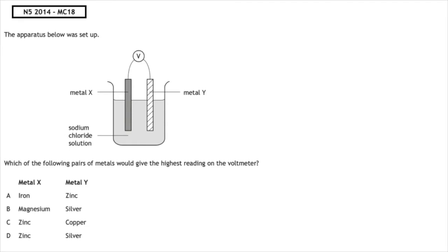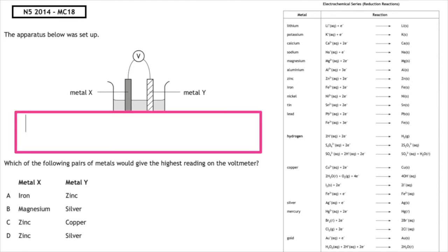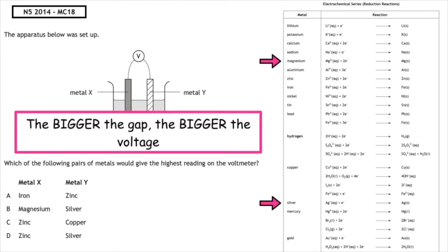This past paper question is from the National 5, 2014, multiple choice 18. The apparatus below was set up. We have metal X and we have metal Y. Which of the following pairs of metals would give the highest reading on the voltmeter? Remember, the bigger the gap, the bigger the voltage. When we look at all the different combinations, we can see that the correct answer to this is multiple choice answer B. When we look at magnesium and silver, it has the biggest gap, so would produce the biggest voltage.